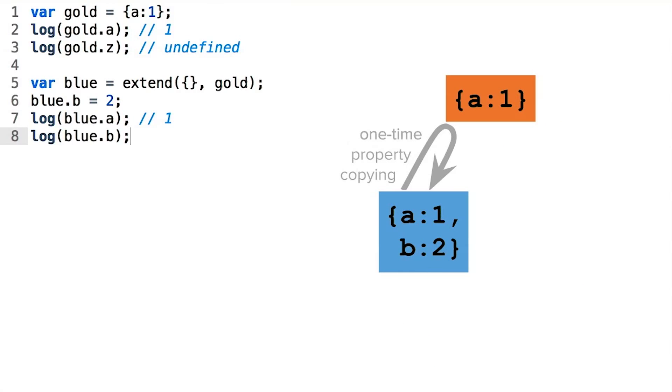And it's no different for the property that was added manually by our code. As with the gold object, a lookup for a property that isn't available on blue should result in undefined.